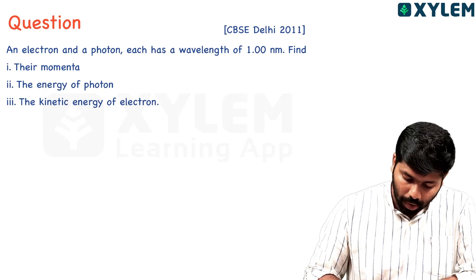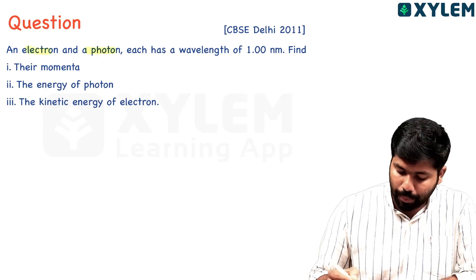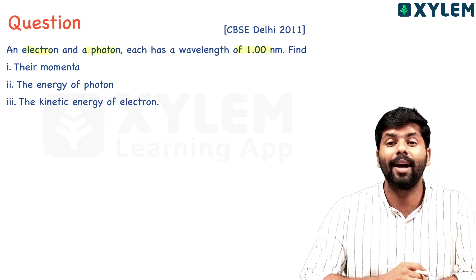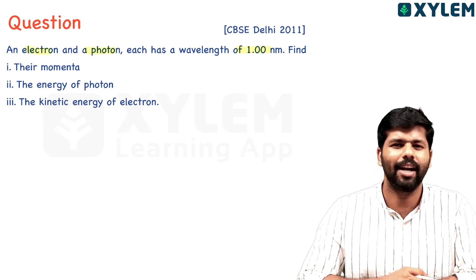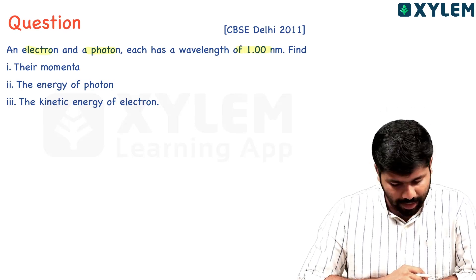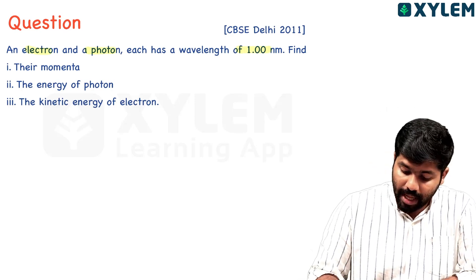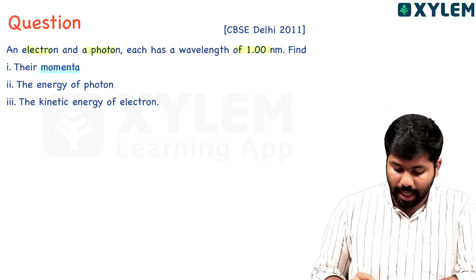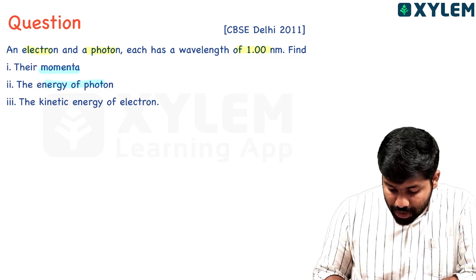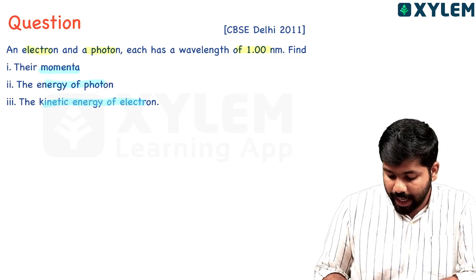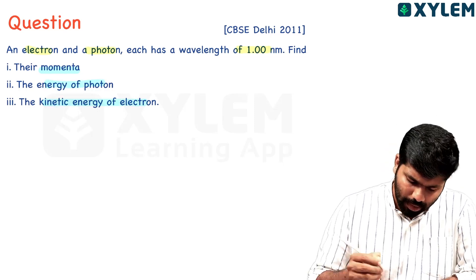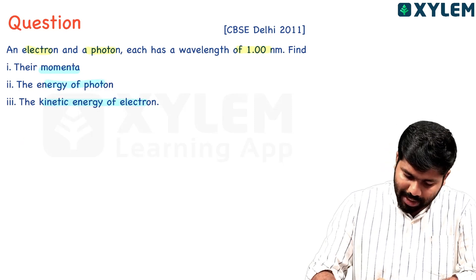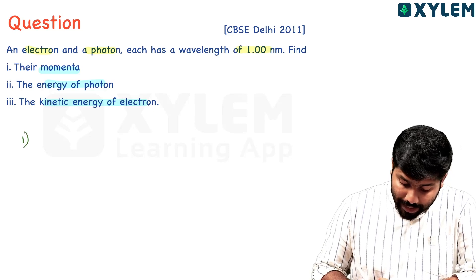Electron and proton — this is a wavelength of one nanometer. First question: find their momenta. Then, find the energy of the photon and the kinetic energy of the electron. First, we will learn momenta.